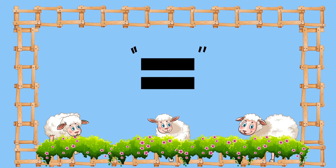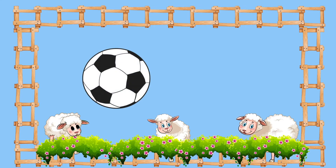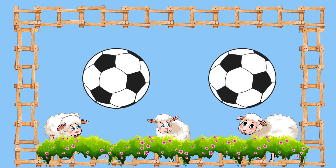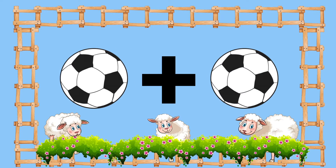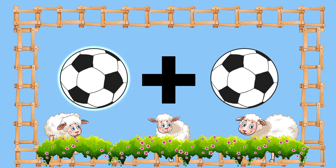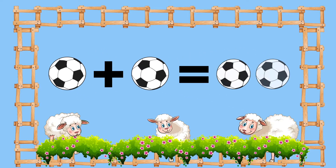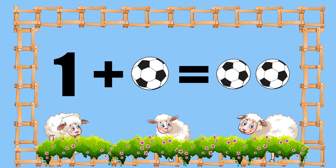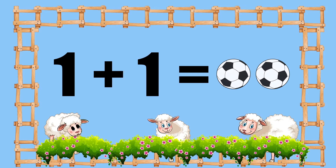And this is an equals to sign. So let's get going. Here is one ball and here is one more ball. Let's add them: one, two. So one ball plus one ball equals to two balls, which means one plus one equals to two.